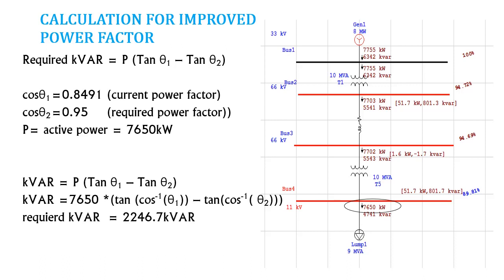So in order to find out the kVAR, I have written 7650 in place of P and for theta 1, I am actually taking the cos inverse of the power factor. And same for the theta 2 and when I am calculating this term, I will get 2246.7 kVAR. Now, let's apply this capacitor on SLD.